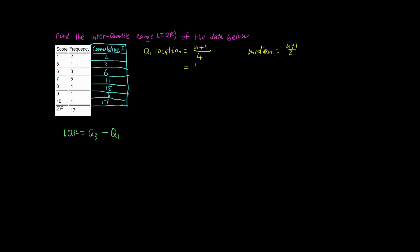So we have 17 plus 1 over 4. 17 plus 1 is 18, 18 over 4 is 4.5.